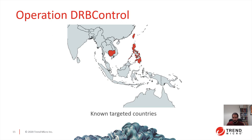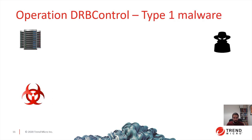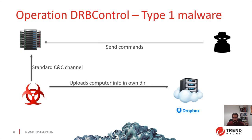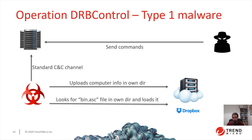Another example is named Operation DRB Control, which targeted Southeast Asia. There is a malware family we named Type 1. In this case, there is a standard CNC channel where the malware operator sends information about the infected computer to Dropbox. It also looks for a file named bin.asc, and if that file is found, it loads it in memory and runs it — essentially another backdoor. The threat actor looks at the different infected victims, and if one looks interesting, it will drop this file for only the selected targets.